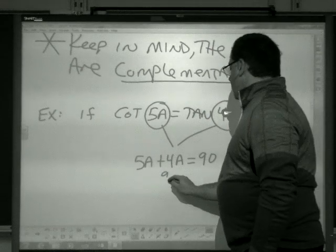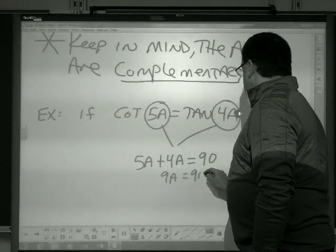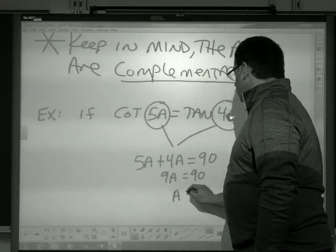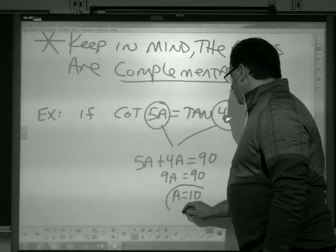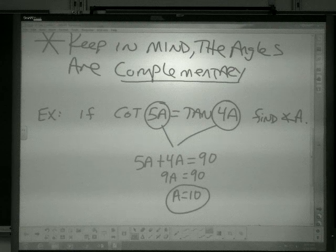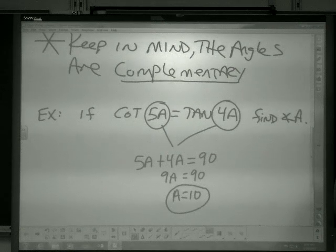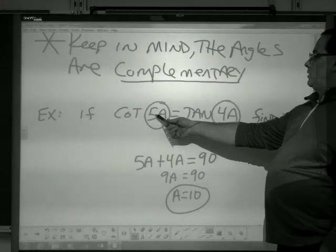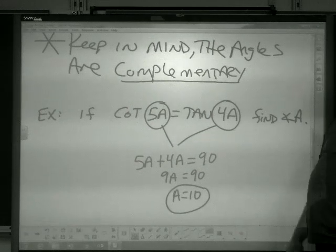So 5a and 4a is 9a, divide by 9, angle a, or a is 10 degrees. Okay? So 10 times 5 is 50. Cotangent 50 equals tangent 40.